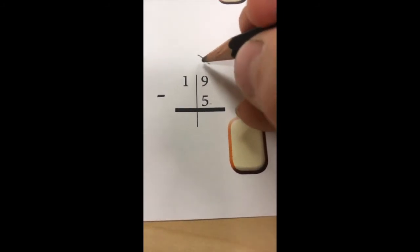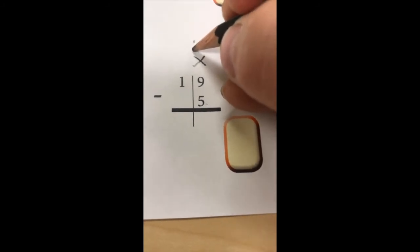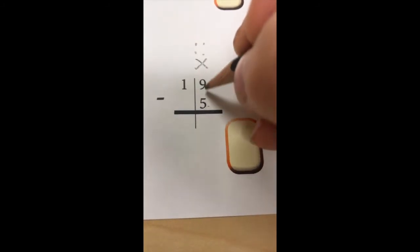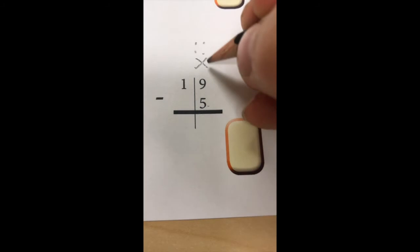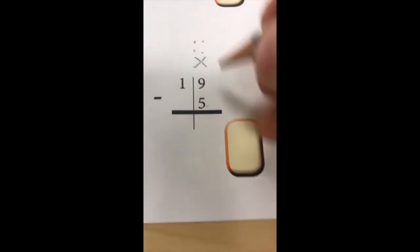9 would look like this. I can take 5 away from it. So there's no need to regroup. What will be left?